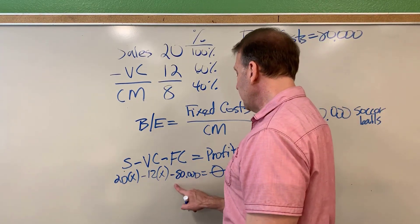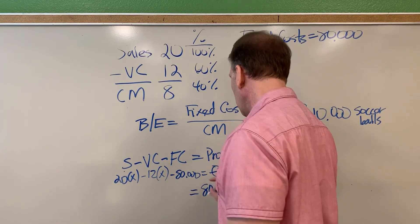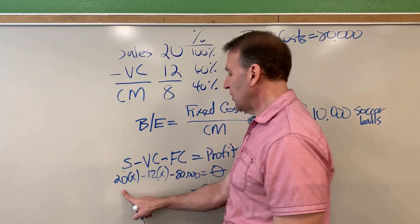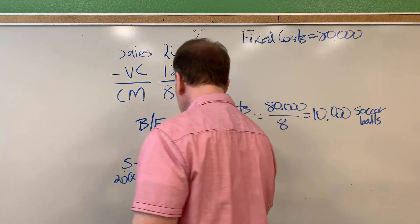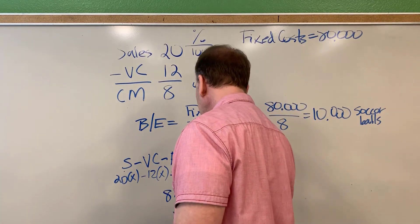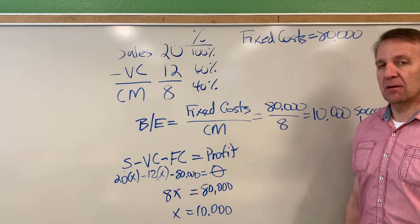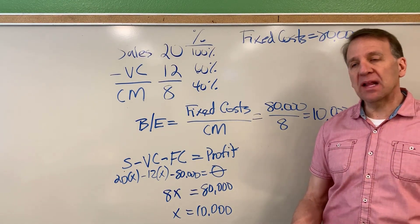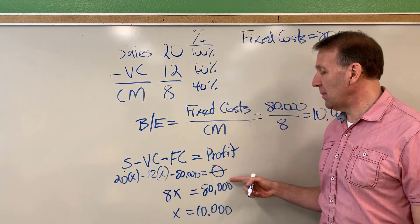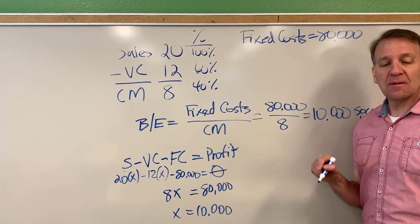Now let's move the $80,000 to the other side. We'll add $80,000 to both sides of the equation. That gets rid of that $80,000. We have $80,000 equals just 8X. When we divide both sides by 8, we would once again get 10,000 soccer balls. When you're calculating break even, you can go straight to this formula, which is what I recommend. Or this one also makes sense and would calculate the same answer, 10,000 soccer balls.